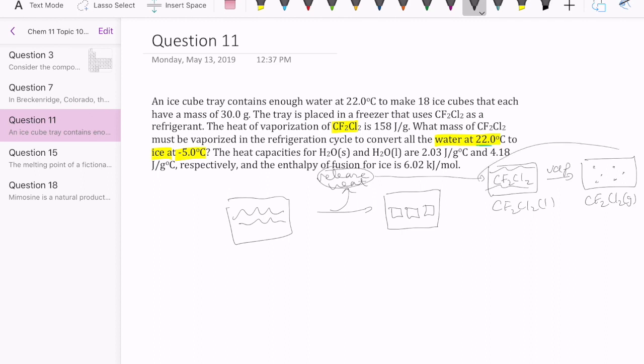So that process requires heat, this process releases heat, and so they're coupled to each other. And if you're vaporizing your Freon, then you're going to release that heat, and that heat is coming from the cooling of water to ice. So the question here is how much Freon is needed or how much CF2Cl2 is needed in terms of mass that must be vaporized if you want to convert your water.